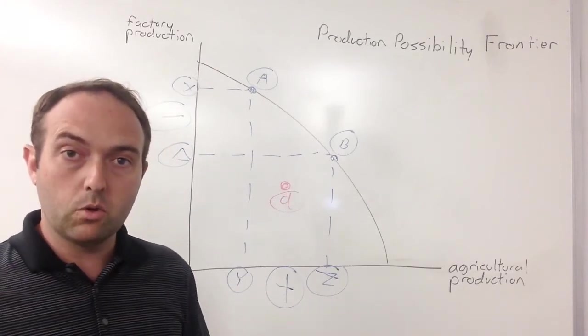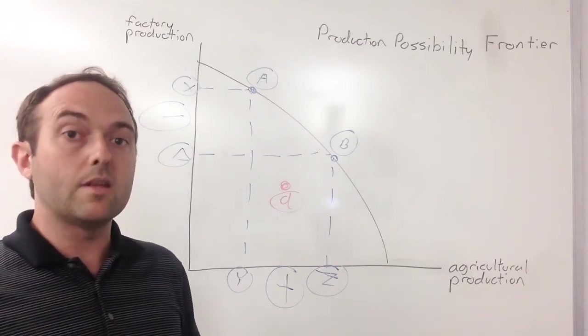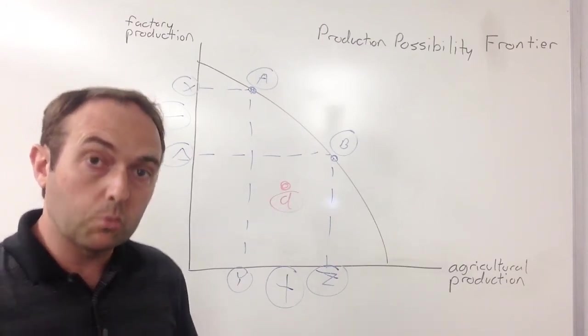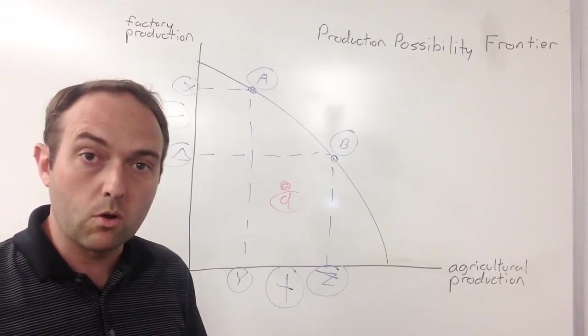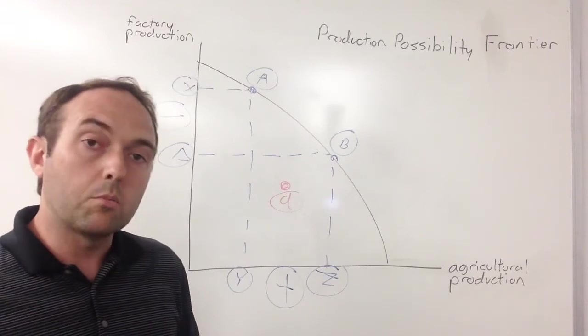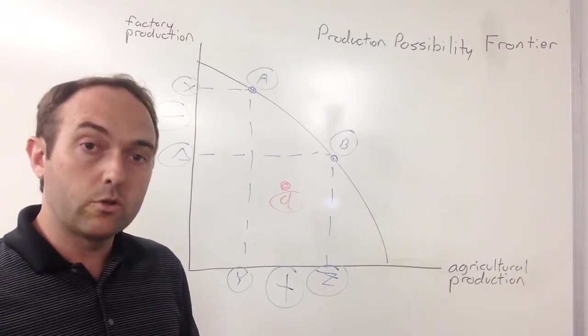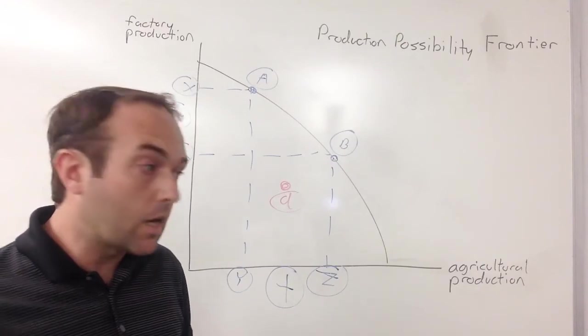Last big concept you want to get with your production possibly frontier is what happens if society has an increase in resources. If you have more resources, your potential to make things is going to grow. That increase of potential to make things is called economic growth. For our PPF, that's represented as your PPF shifting outward to the right, meaning you have economic growth.